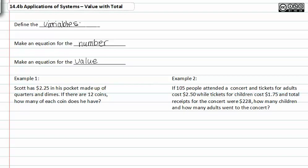Defining the variables is probably the most complicated part at this point in application of systems, because you have to recognize that it represents a number and not an actual value.